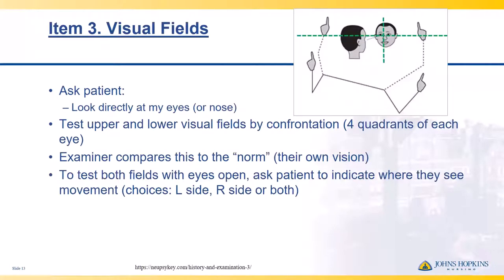Next up is visual fields. You're going to ask the patient to look directly at your eyes or nose. Using quadrants — upper and lower on each side — you'll test if the patient can see your fingers move in each quadrant. You want to be about three feet away and at the same eye level as the patient. You'll test both sides to see if there's any deficit in any of the four quadrants.